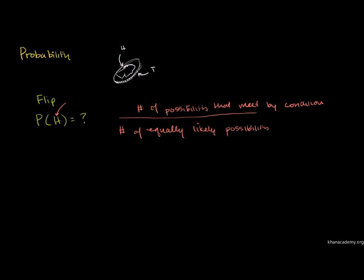The number of equally likely possibilities is 2: one head can apply and tail can apply. The numerator is 1, since head can apply once. So the probability of head is equal to 1 by 2. Therefore, the probability of getting a head in a fair coin is equal to 50 percent.